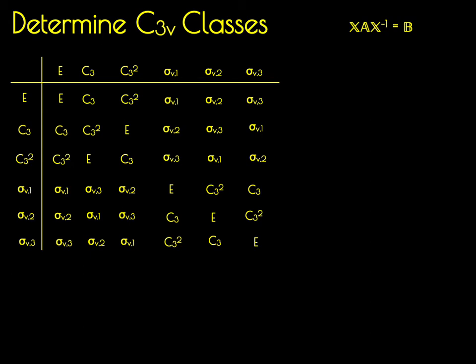So we're going to determine the various similarity transforms for all of our elements. First, we're going to highlight what the inverse of every single element is. E and our mirror planes are their own inverse, while C3, its inverse is the C3 squared, and C3 squared, its inverse is C3.